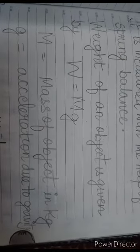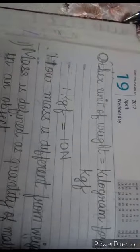What is M? M stands for mass of the object in kg. G stands for acceleration due to gravity, and the value of G is 10 N per kg. Now the unit of weight is N, and its symbol is N. Another unit of weight is kilogram force, or we can say kgf. 1 kgf equals to 10 N.